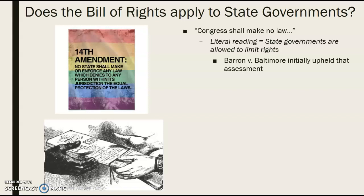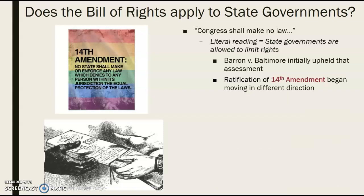Rather than getting into the full background of Barron v. Baltimore, the initial finding — the majority opinion — upheld that literal assessment: the federal government couldn't deprive civil liberties, but states could. So when we think about today, there's a gap. How did we get from Barron v. Baltimore, where states were allowed to deprive us of our civil liberties, to today? Everything started changing after Barron v. Baltimore. When the court upheld that states could limit civil liberties, it took until the ratification of the 14th Amendment before these rights were starting to be applied to the states too.